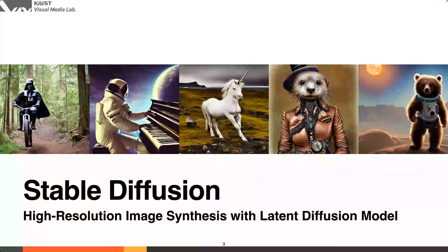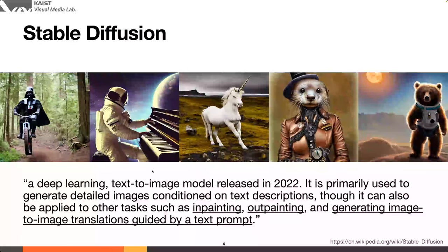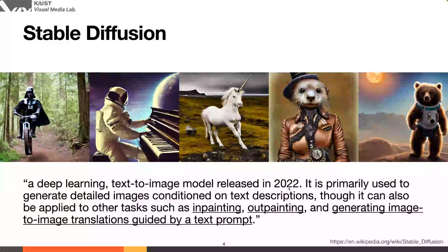Stable diffusion is a text-to-image generation model using a diffusion process. Looking it up on Wikipedia, it's described as a deep learning text-to-image model released in 2022 — that's important to keep in mind. It synthesizes images from a text prompt; for example, giving the prompt 'a dust fader riding a dirt bike in the woods' generates images like shown here. On top of text-to-image generation, you can also do inpainting, outpainting, and image-to-image translation.